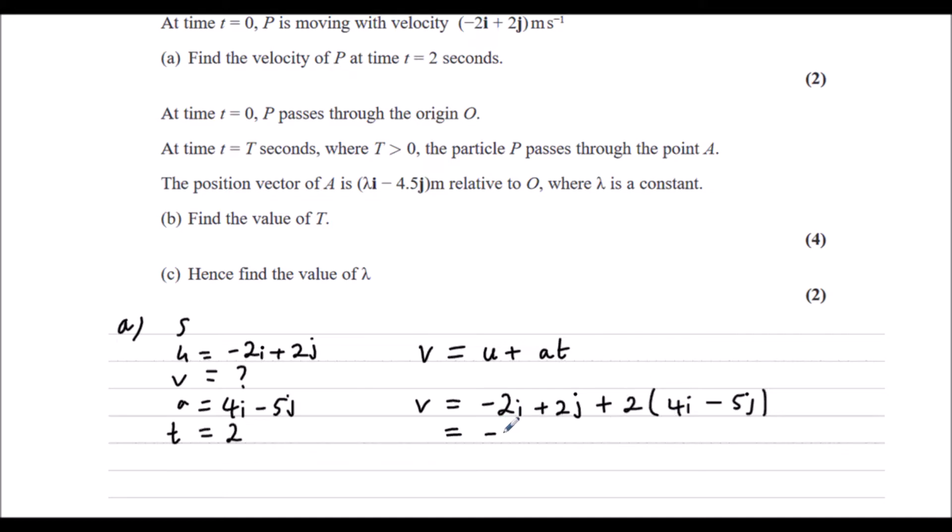If we expand the bracket, we're going to have 2 times 4i, which is 8i, 2 times minus 5j, which is minus 10j. And collecting the like terms, the i's together and the j's together. Negative 2 plus 8 is 6, so we've got 6i, and we've got 2 take away 10, minus 8j. That's the velocity in meters per second.